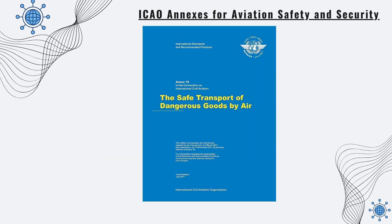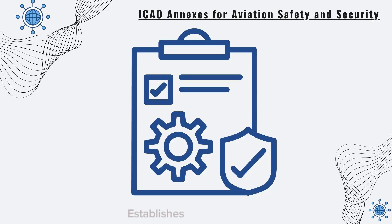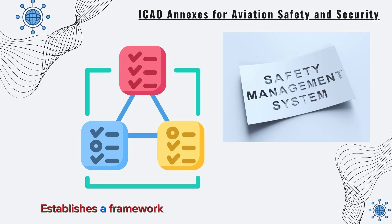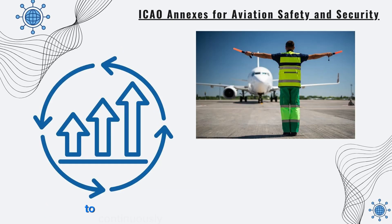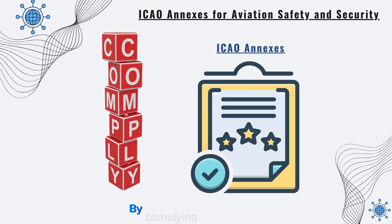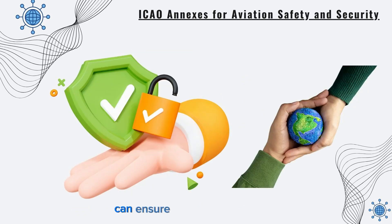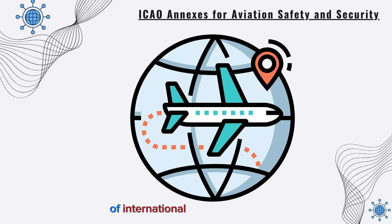Annex 18, Safety of Transport of Dangerous Goods by Air, establishes standards for the safe transport of dangerous goods by air. Annex 19, Safety Management, establishes a framework for safety management systems to continuously improve aviation safety. By complying with the ICAO Annexes, contracting states and aviation stakeholders can ensure the safe, secure, and sustainable development of international air navigation.